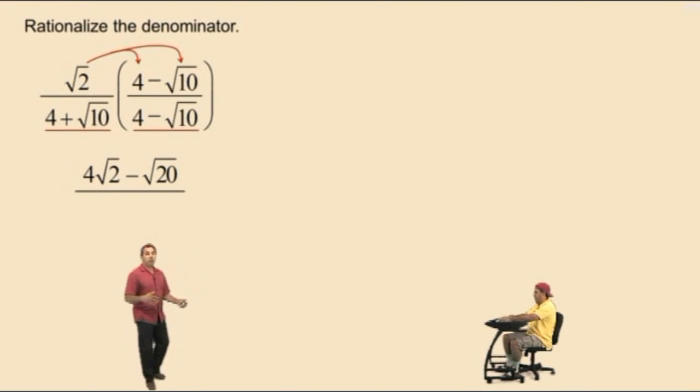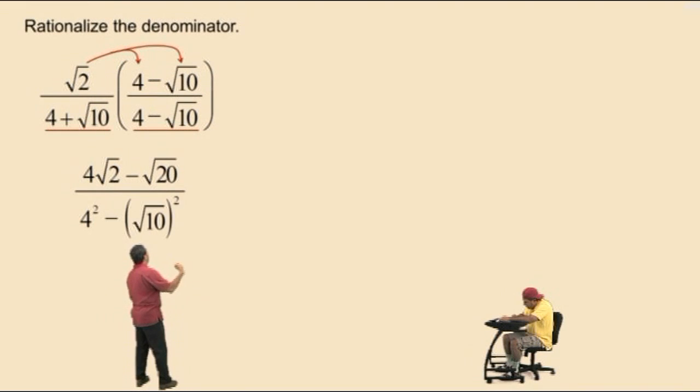Now remember, when you multiply conjugates together, you end up with a difference of 2 squares. So Charlie, what's our first square? 4 squared. That's right. Then we have a subtraction. What's our second square? Square root of 10 squared. That's right.